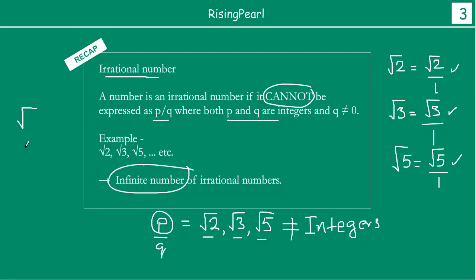Just to quickly recap: this symbol is called the radical sign. In the case of square root 2, there is no number written in the radical, which by default means it is 2 — that is why it is called a square root. You can also have a cube root, where you add 3 to the radical sign, or a fifth root where you add 5. If you do not write anything, it basically means it is 2, a square root. So square root 2, square root 3, square root 5 and so on.